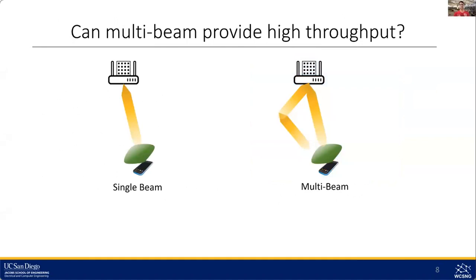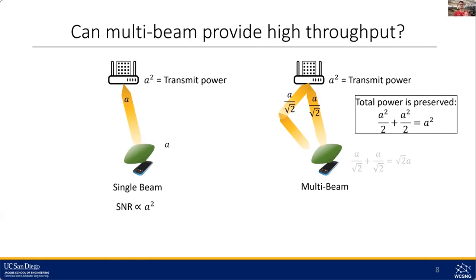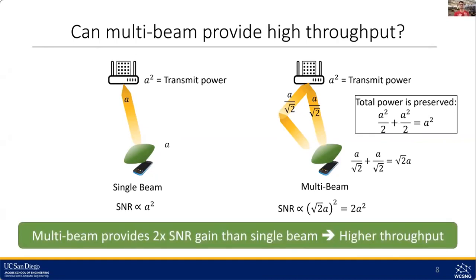To show how multi-beam improves throughput: with total transmit power A², single beam transmits signal A through a unity-loss channel, receiving A with SNR proportional to A². In multi-beam, the same total power A² is split as A/√2 per beam. Both signals travel through unity-loss channels and the received signal is A/√2 + A/√2 = √2·A, giving SNR proportional to 2A² — two times higher than single beam. This improvement comes from maximum ratio combining, a well-known concept not previously utilized in millimeter wave single-beam systems.